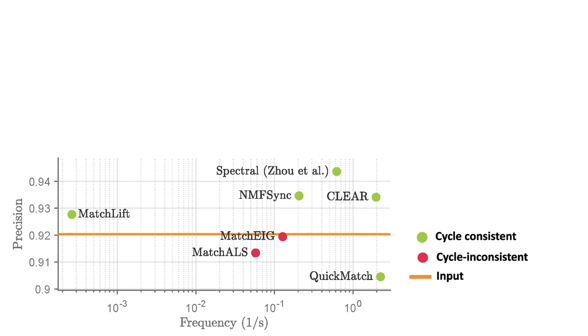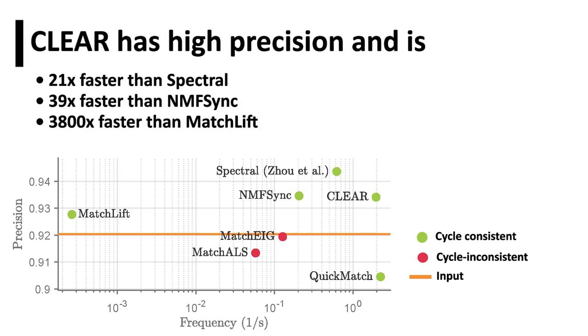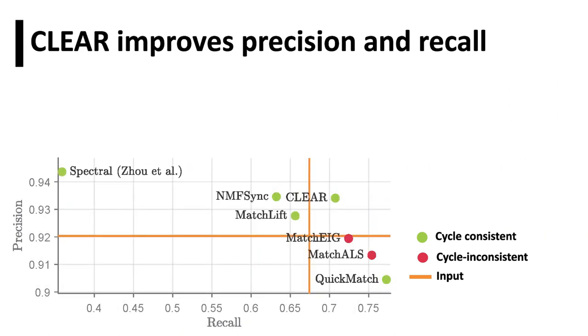CLEAR generates cycle-consistent output with higher precision and faster runtime. In addition, CLEAR improves both the precision and recall of the noisy input on this dataset.